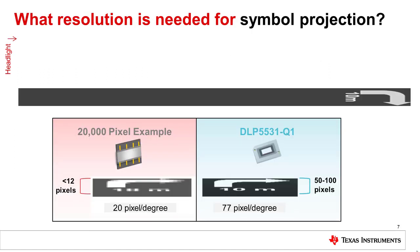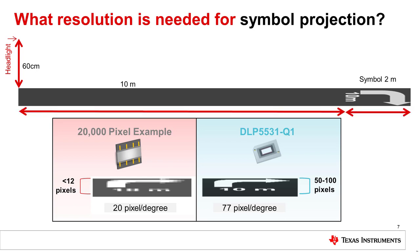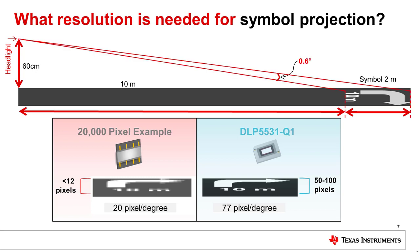But how many pixels does a headlight really need to perform these functions? To answer that, let's look at the navigation symbol that was projected on the previous slide. We can assume the headlight is mounted in the vehicle approximately 60 centimeters above the road. The symbol is 2 meters long and projected at a distance of 10 meters. Because of the steep angle that this symbol is projected on the ground, it actually fills less than one degree of the headlight's entire field of view. These images show the flattened image from the headlight's perspective.